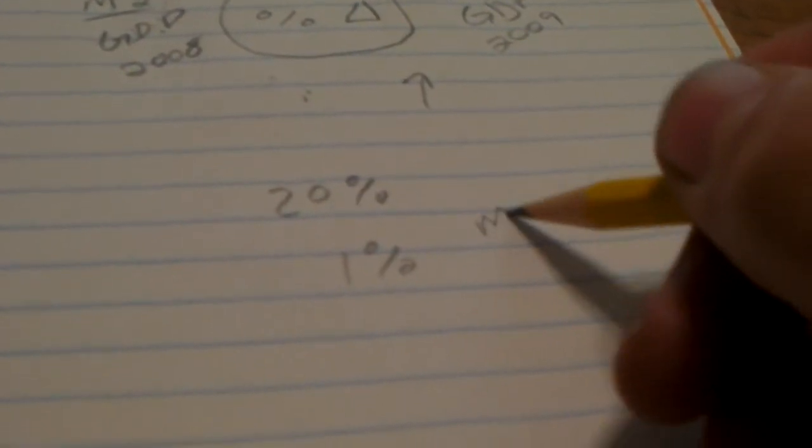What we did was we quit tracking M3. And what M3 is, it's M2 plus high dollar long-term securities.